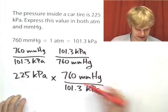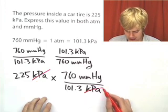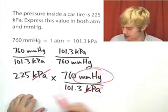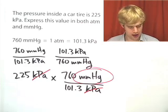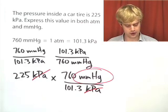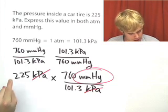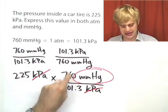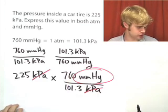Now, did we set it up right? We did because kPa is on the top here and on the bottom here, which means they cancel out. Our final units, the only ones that are left, are going to be millimeters of mercury. So I crank through, I do this on a calculator. It's a little bit harder. Remember, 225 times 760, the answer to that, divided by 101.3 kPa.